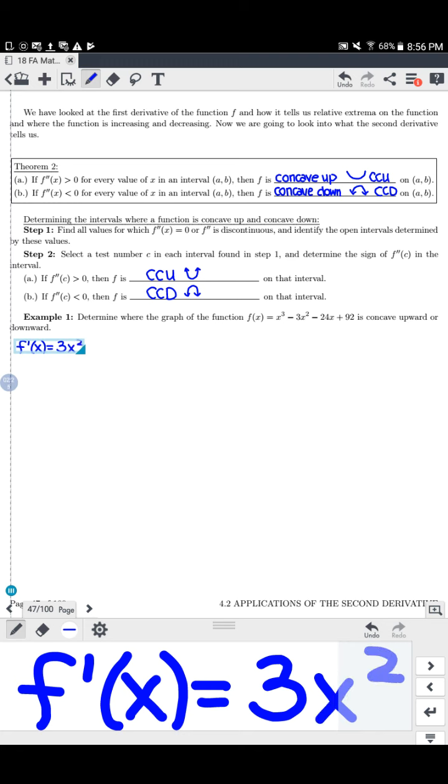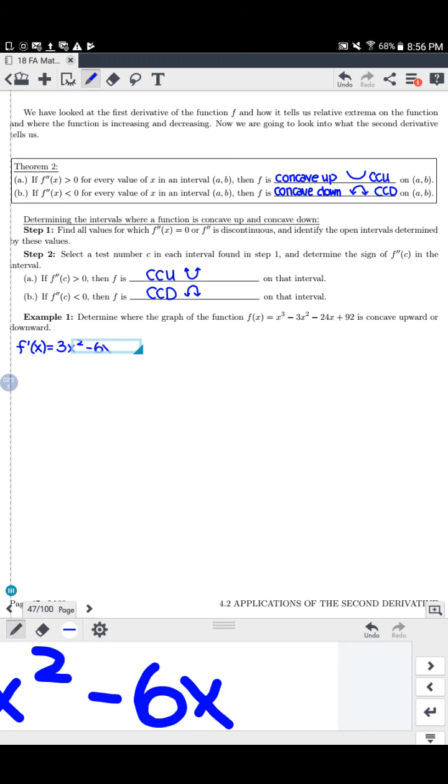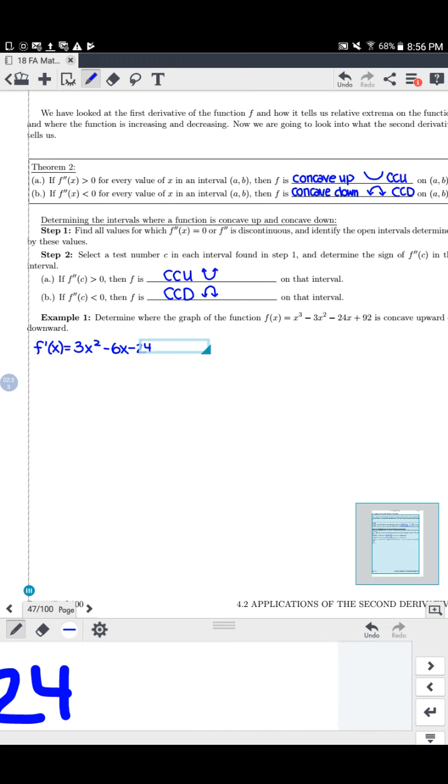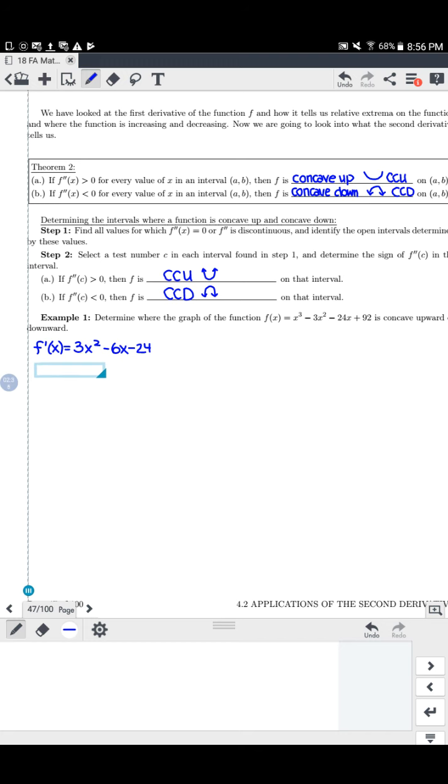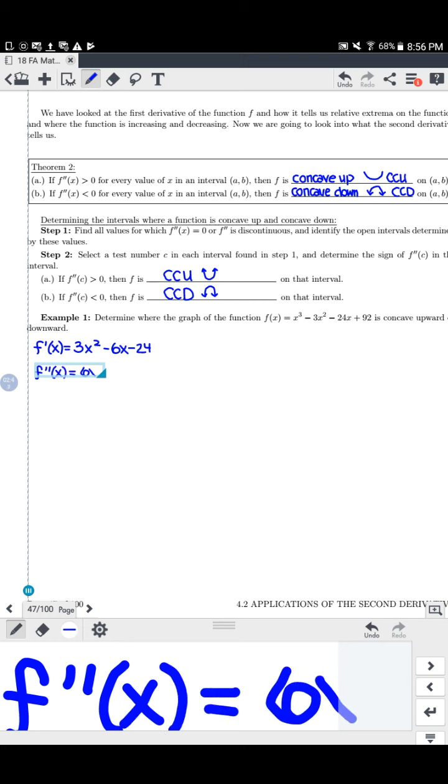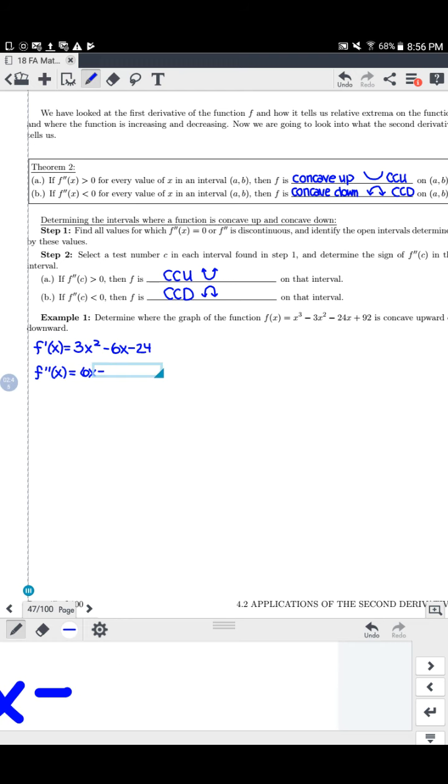So our first step here, we're going to take the derivative of this, 3x squared minus 6x minus 24. And instead of having to set that equal to zero, which we already did with this exact function in the last section, instead we're going to take the second derivative of it and set it equal to zero. So we're going to get 6x minus 6. And that is a much easier function to solve for x than the last one. So to get x by itself, all I need to do is add 6. 6x equals 6. And then divide by 6. So x is just 1.